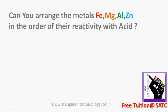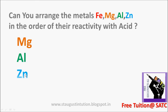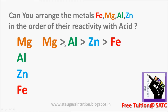Can you arrange the metals iron, magnesium, aluminium, and zinc in order of their reactivity with acid? The order is: magnesium, aluminium, zinc, iron — from most reactive to least reactive.